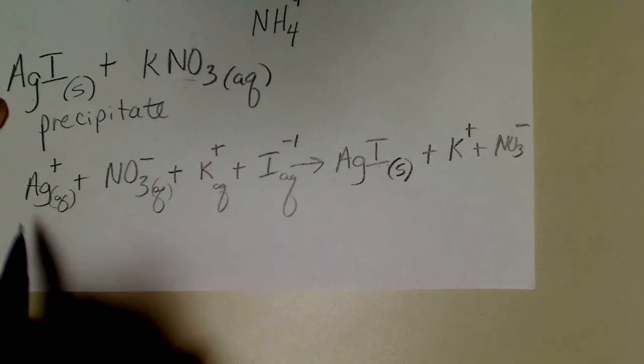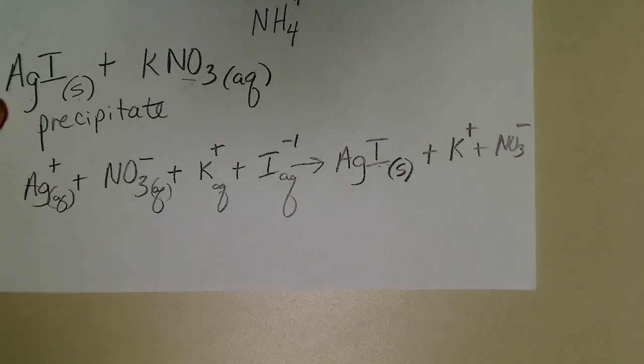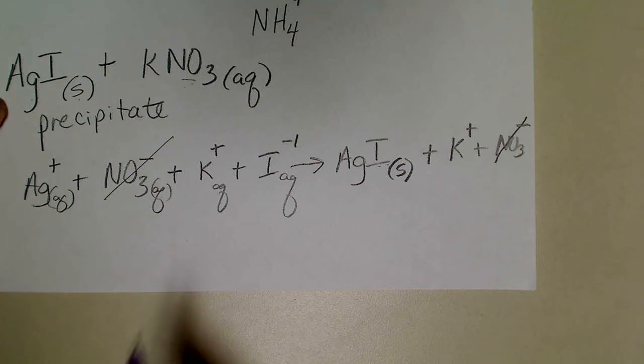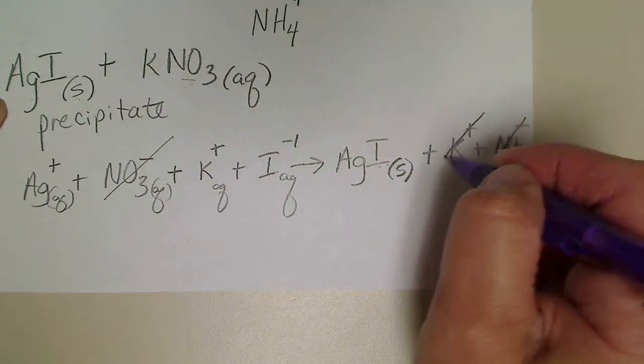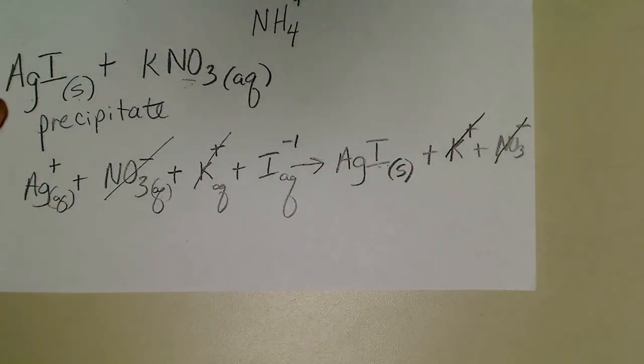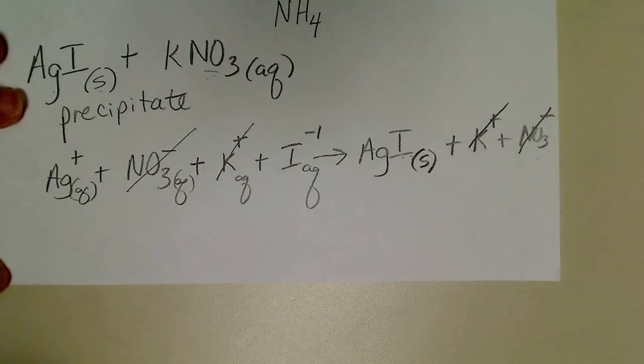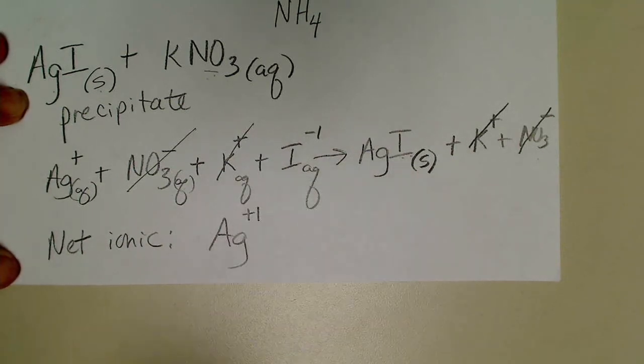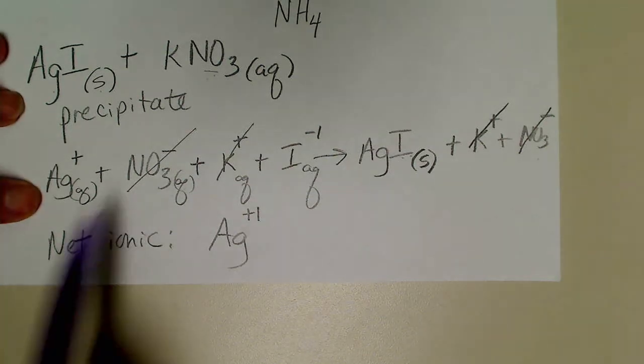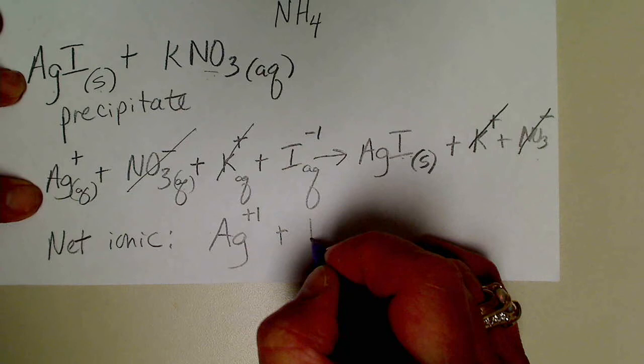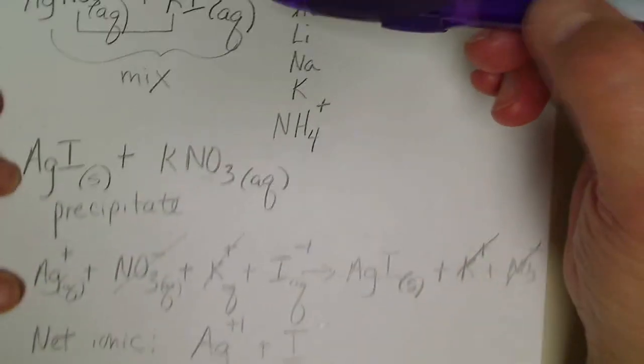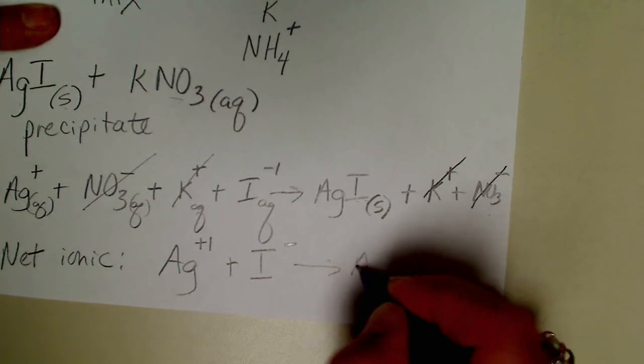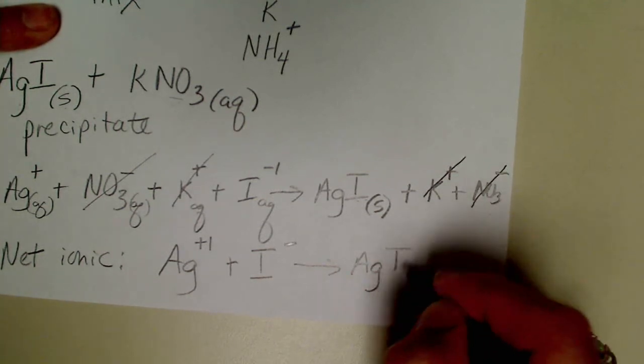And then we would write K+ plus NO3-. So the complete ionic equation lists everything that's aqueous separated in water. If we cross out the species that are identical on both sides of the arrow, our potassiums show up on both sides, our nitrates show up on both sides. So our net ionic equation would be our silver ion, which we dissolved in the form of silver nitrate, and then the iodide ion, which was introduced in solution in the form of potassium iodide. Those two ions would form the solid, the white powder that we saw form in the beaker.